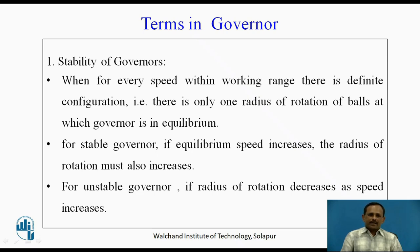For a stable governor, if the equilibrium speed increases, the radius of rotation of the ball must also increase. For an unstable governor, if the radius of rotation decreases as the speed increases, that is nothing but an unstable governor.